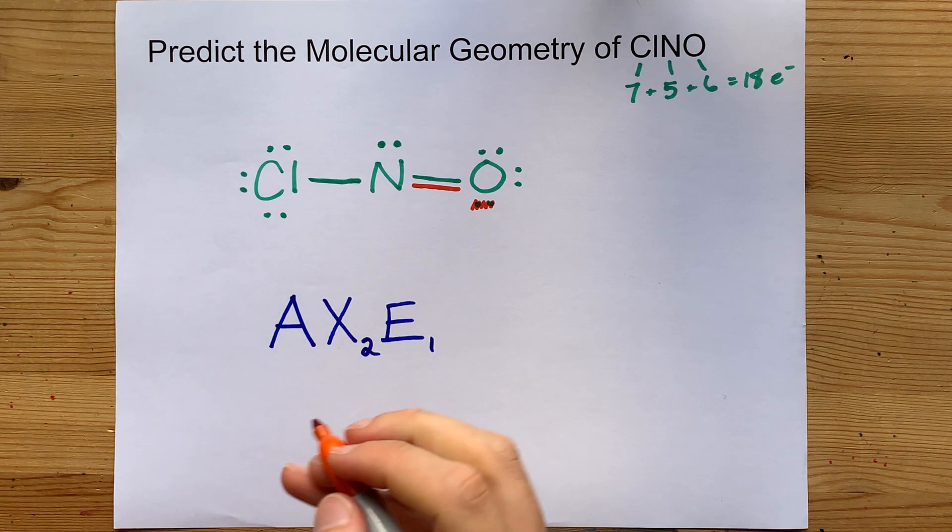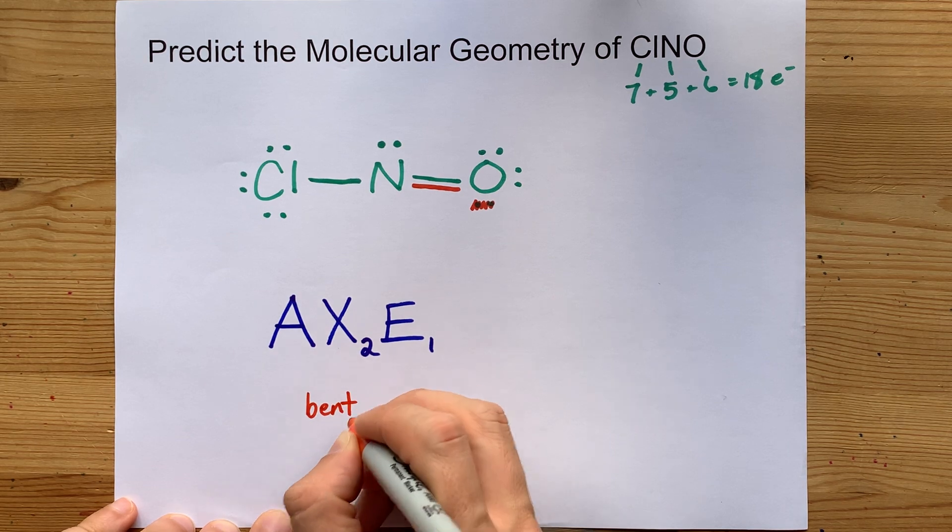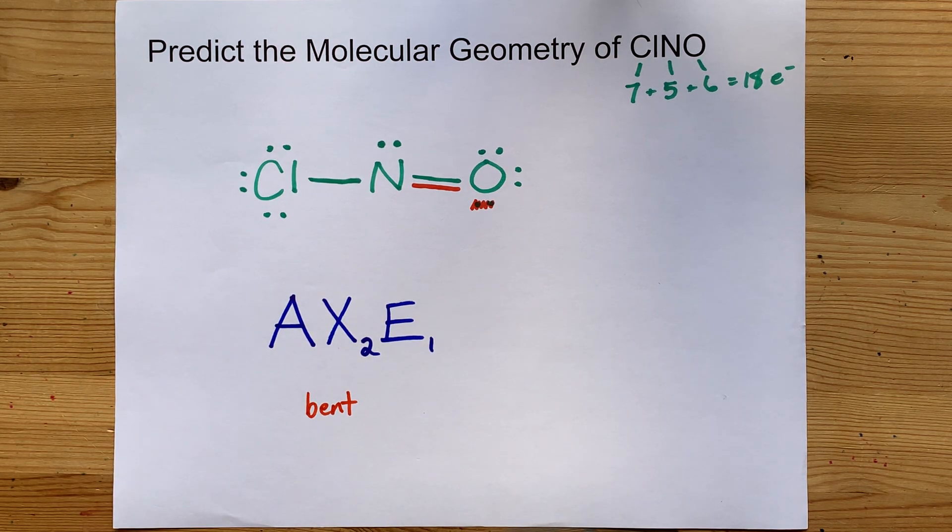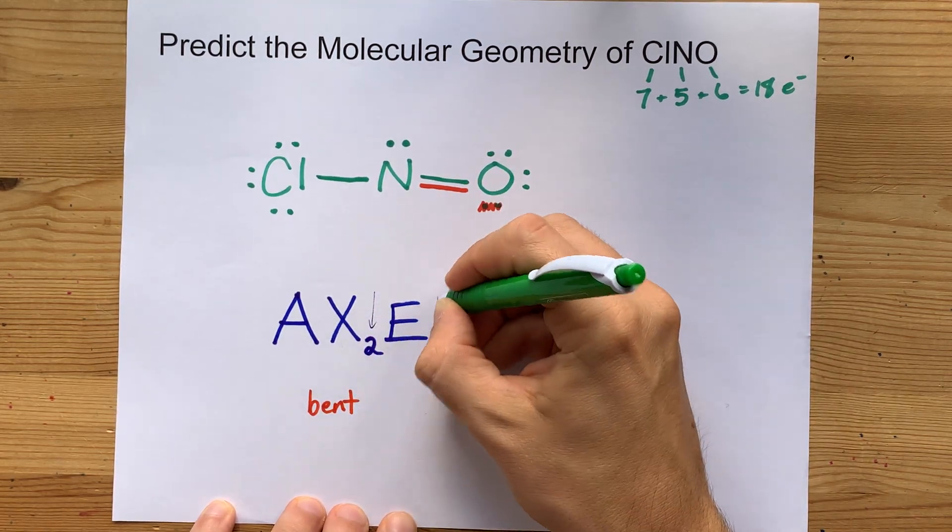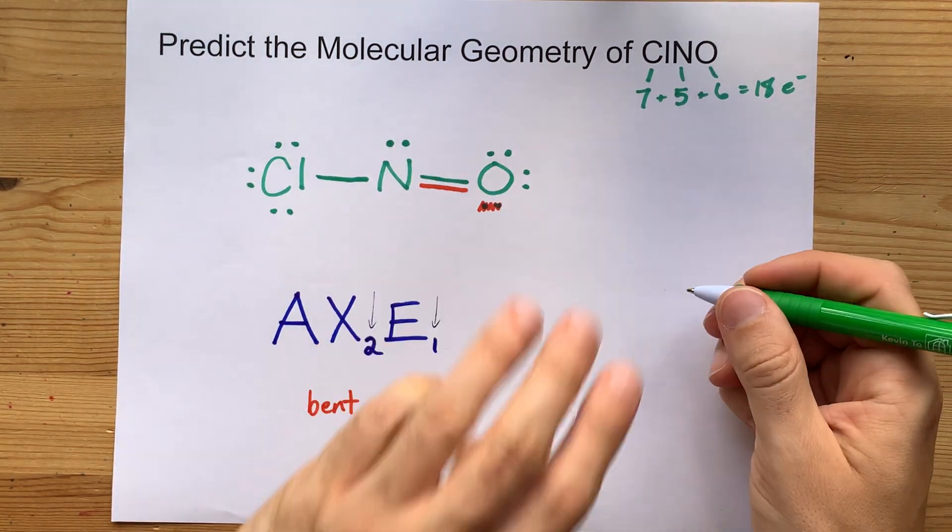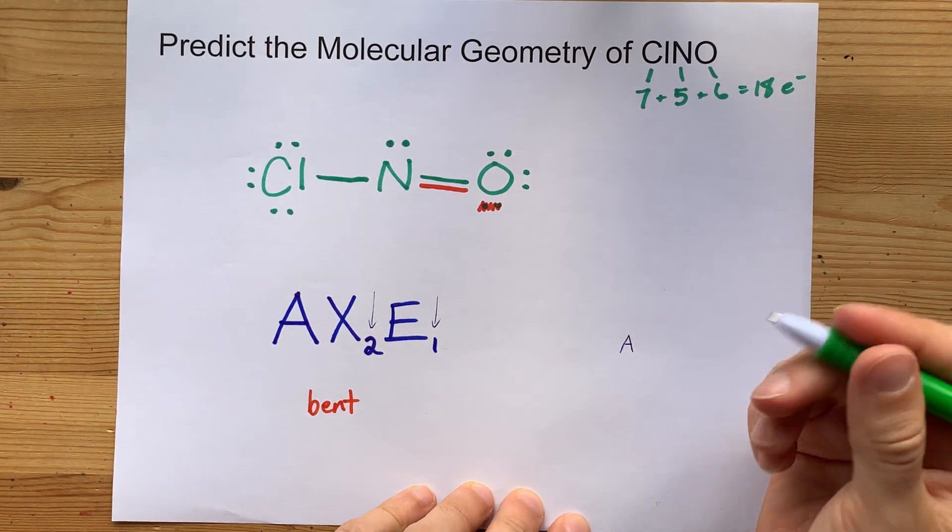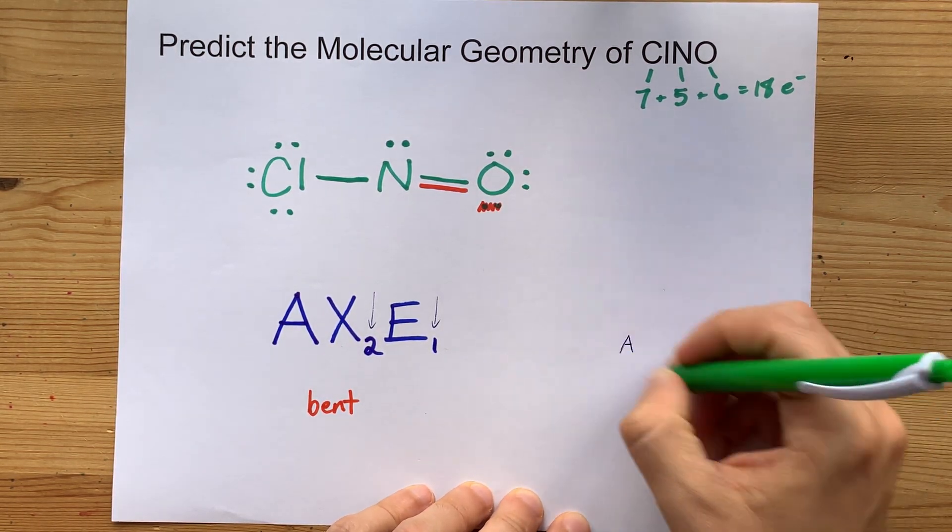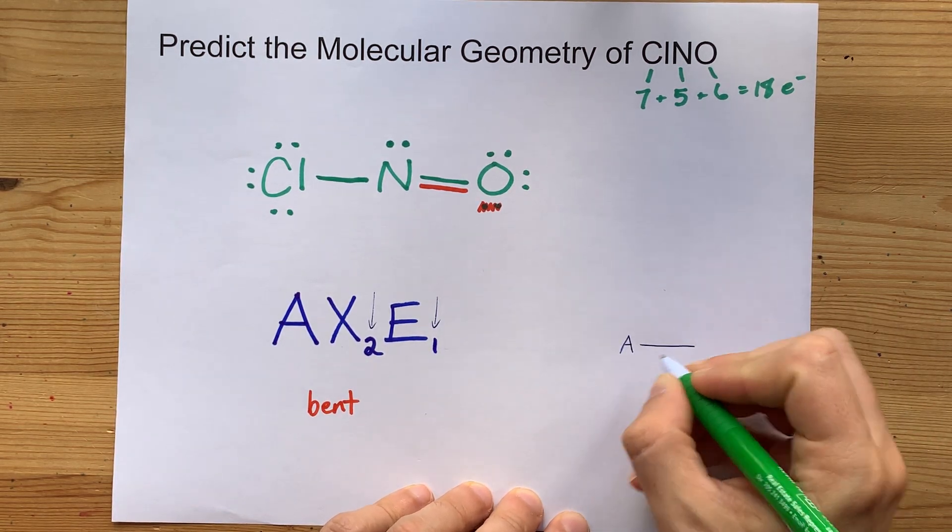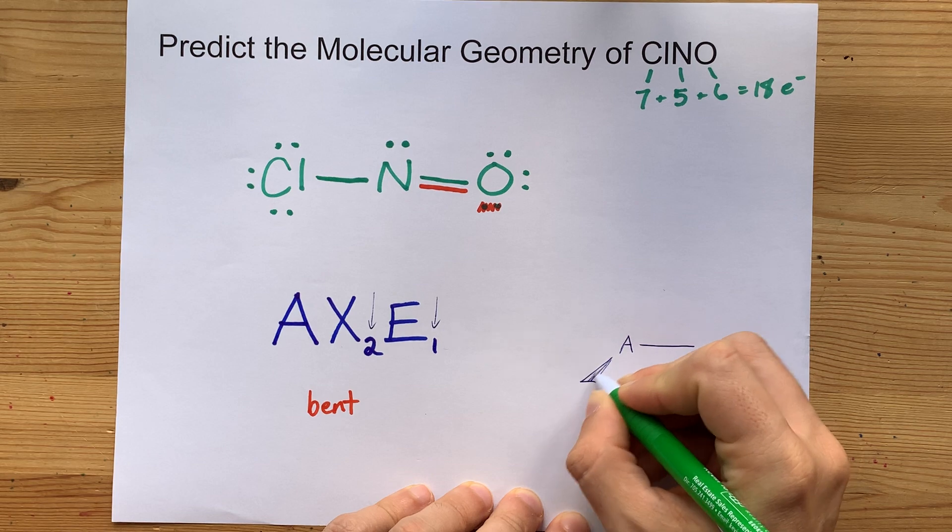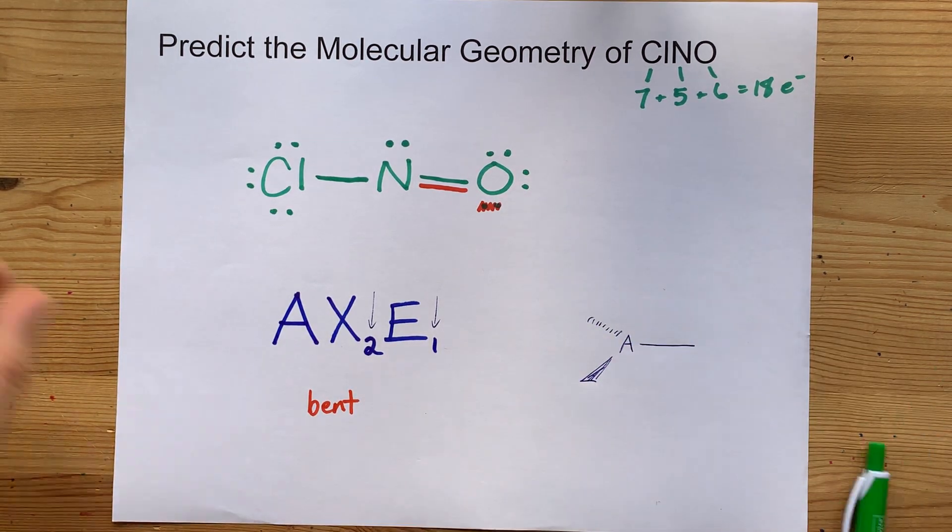Now, you might just already know that that's non-linear or bent. I think bent is the word that they prefer for that. But I want to show you why that's the case. This 2 and 1 combined make three things. So around your A, you have three things. How far apart can three things get? And the official answer for that is if they spin out from each other, they can all get 120 degrees away from each other.